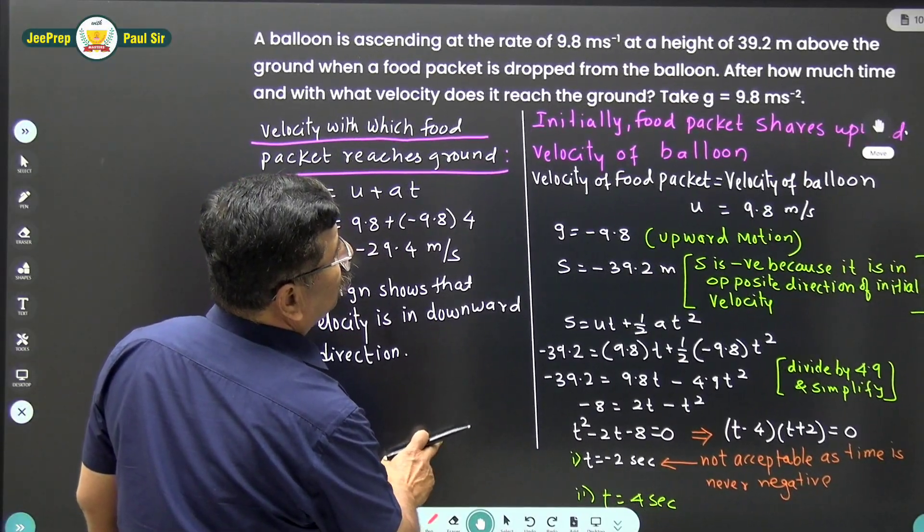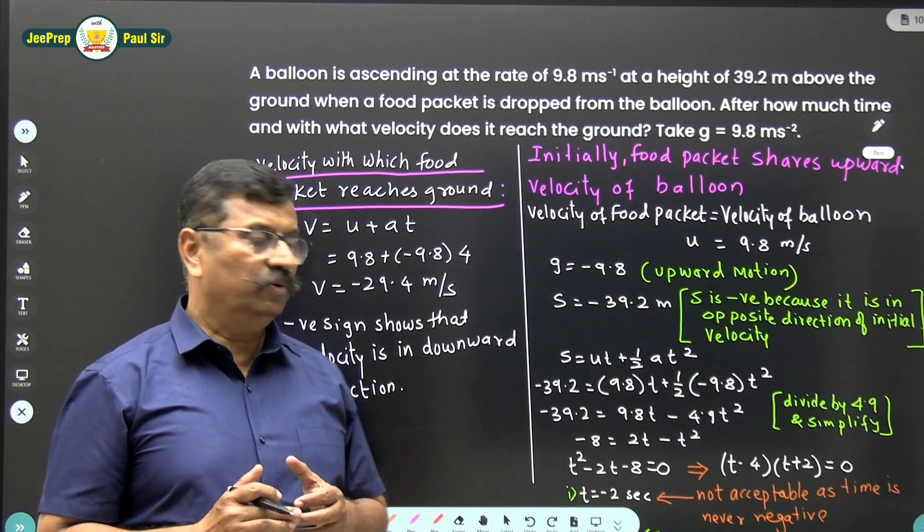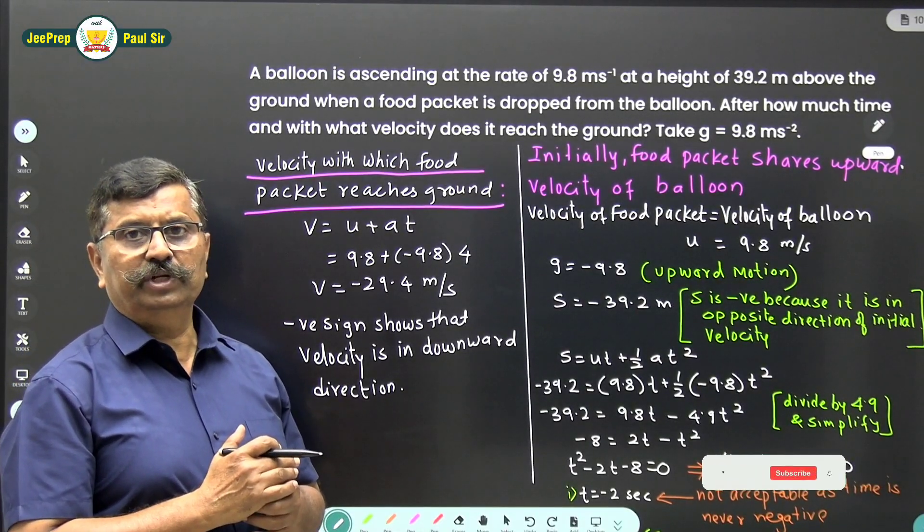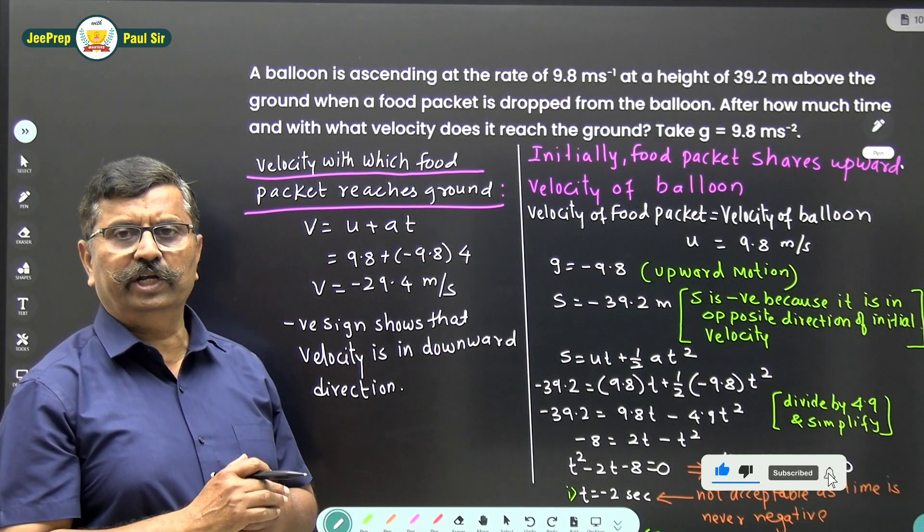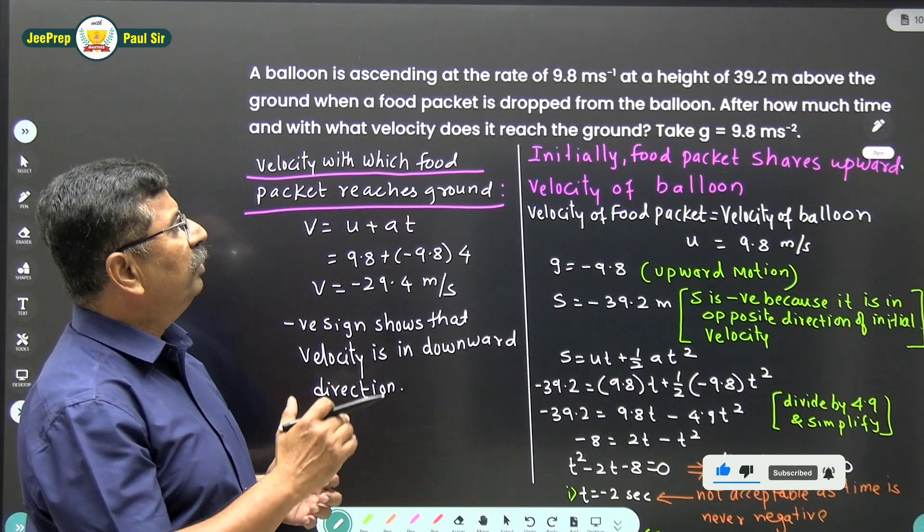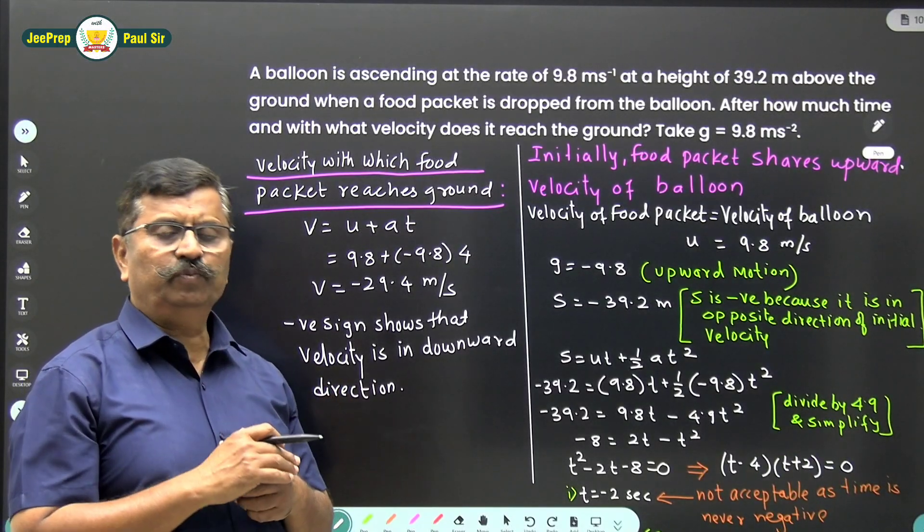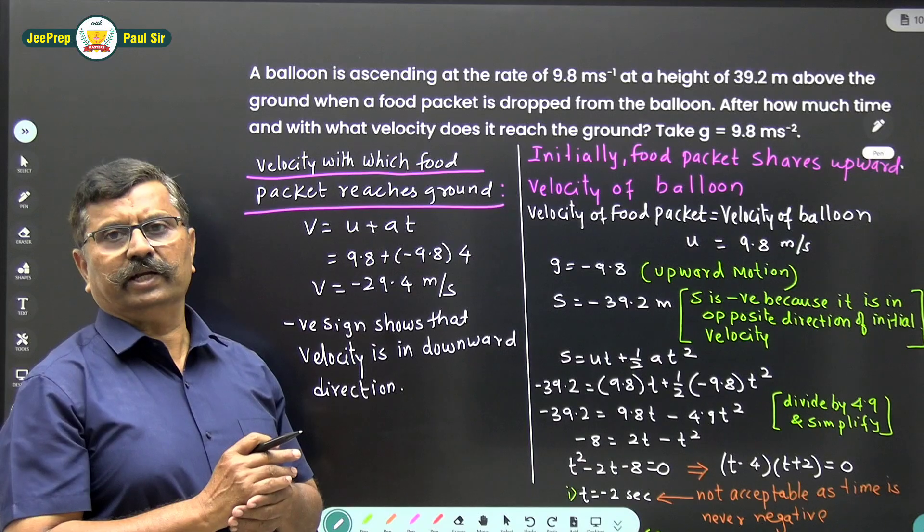Now in this problem, there is a balloon ascending with a speed of 9.8 meter per second. When the balloon is at a height of 39.2 meter, it drops a food packet.